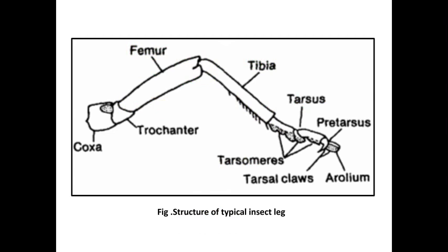The first part is the coxa, then the second one is the trochanter, then the femur — the femur is the strongest part of the insect leg. Then the tibia — the tibia is the longest part of the insect leg. Next, the tarsus and pretarsus are present at the tip of the insect legs.